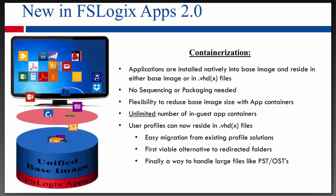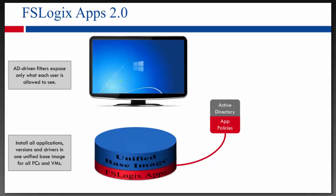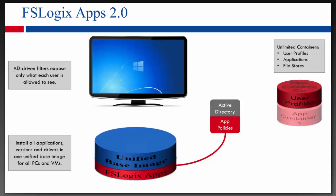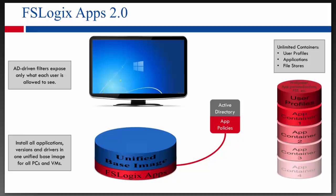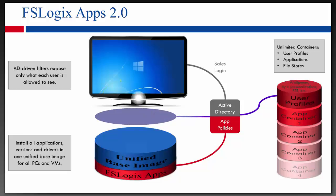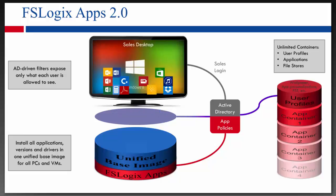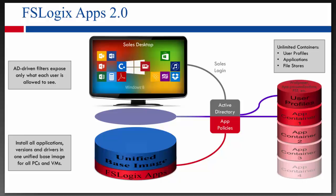We can make that a reality today with our profile container. In 2.0, the architecture is similar to what I described before. We install the applications into the unified base image, install the FSLogix piece, create our rules, and assign those rules to Active Directory users and groups. We can have unlimited containers — apps installed in the base image, applications built to app containers, and all the users' personalization inside a profile container. So when the sales group logs in, they get all their applications, their personalization, and the applications residing in the unified base image or inside a profile container.